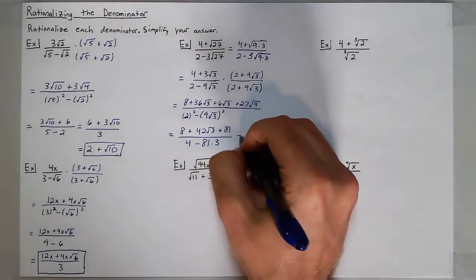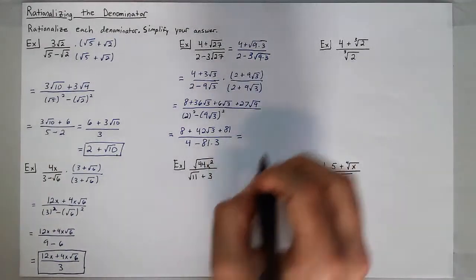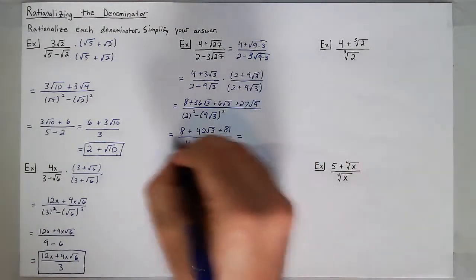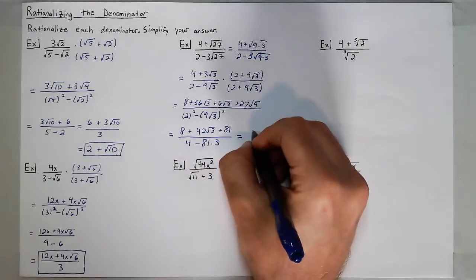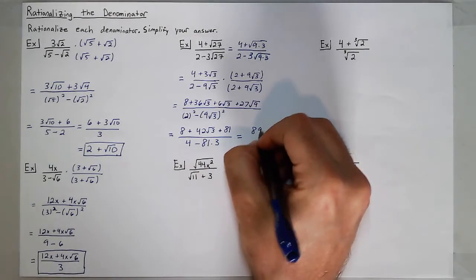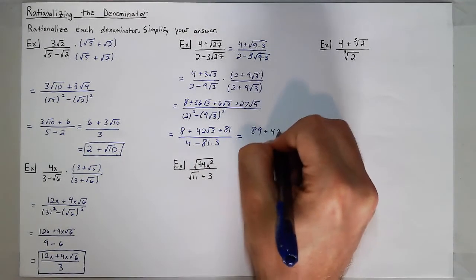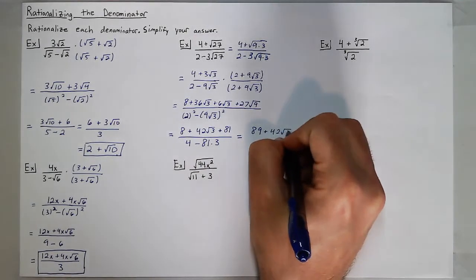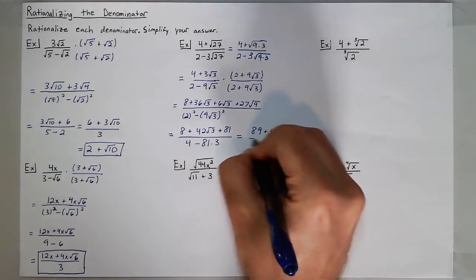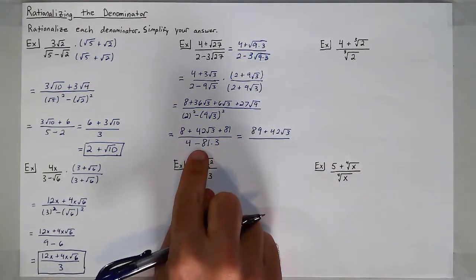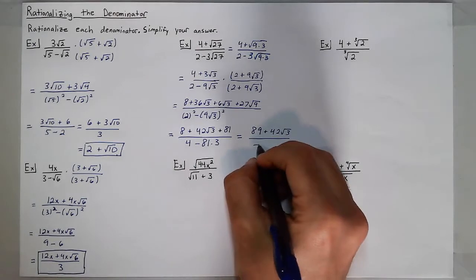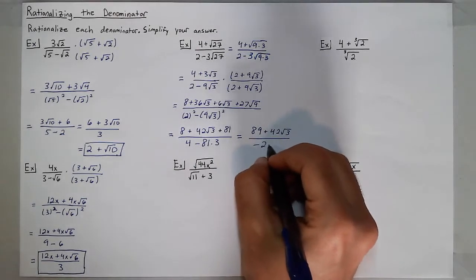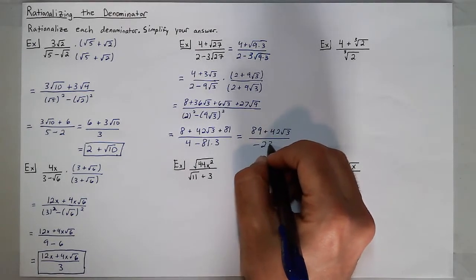So when I simplify, my numerator will be 8 plus 81, which is 89, plus 42 square roots of 3. My denominator is 4 minus 243, which gives me negative 239.